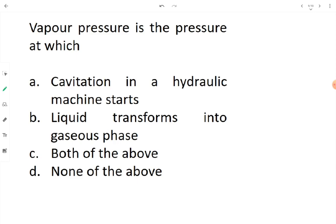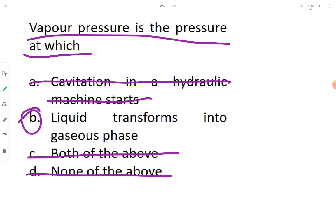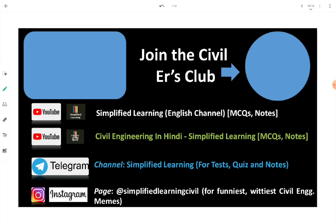For the final question, vapor pressure is most correctly defined as the pressure at which liquid transforms into gaseous state. Although cavitation in a hydraulic machine does involve vapor pressure, cavitation requires additional conditions beyond vapor pressure alone — so option A is not the most correct answer. That covers vapor pressure; in the next lecture we will cover questions on cavitation. Please like the video, comment your suggestions, subscribe to Simplified Learning, and take care.